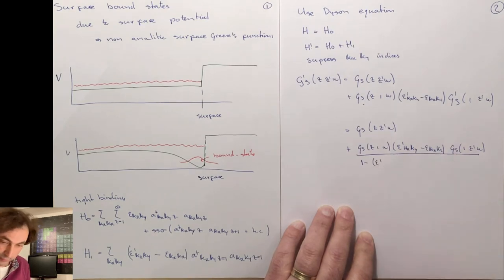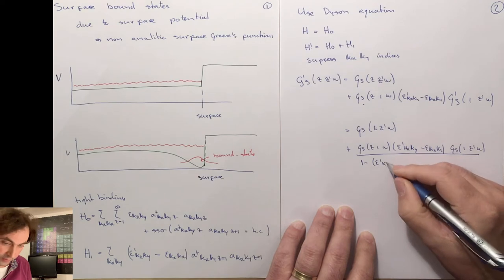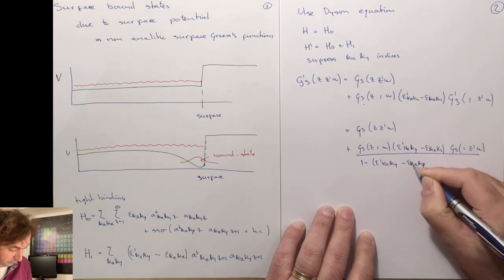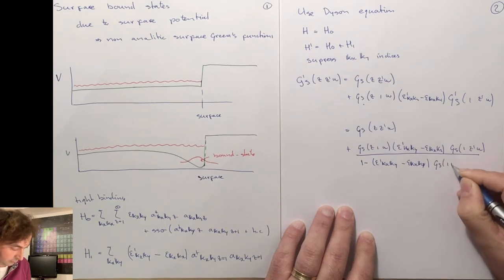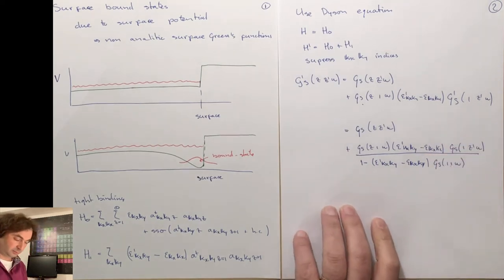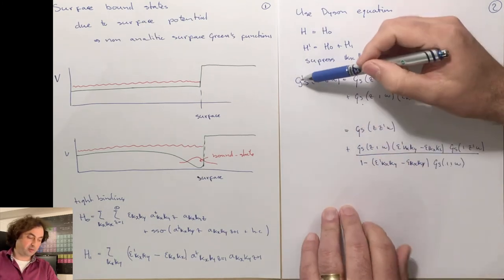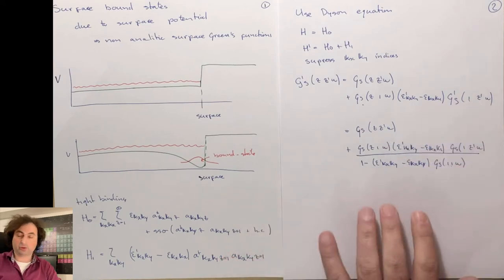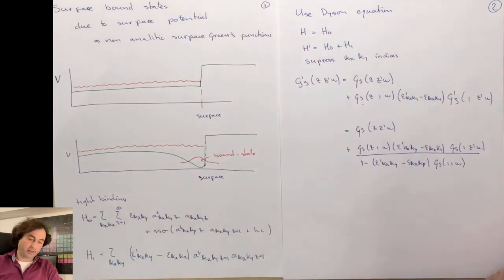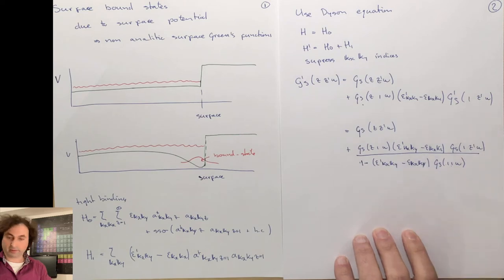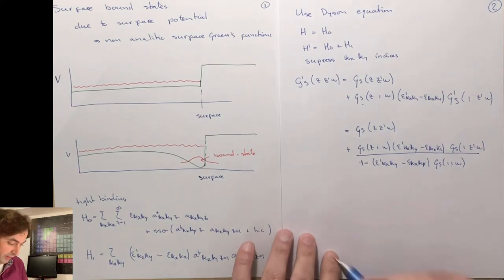That will give you a geometrical series that we can sum up to infinite order. The result is that your Green's function is the bare Green's function plus G_s(z,1,ω) times [epsilon'(kx,ky) minus epsilon(kx,ky)] times G_s(1,z',ω), divided by 1 minus [that denominator term], which comes from the summation of the geometrical series. Now the poles that we have with an additional surface potential are equal to the poles that we have without a surface potential — these are the states that have the same eigenenergies as in the bulk, and they can propagate straight into your system. We can, however, get an additional pole if the denominator becomes zero such that this diverges. So we find a bound state.